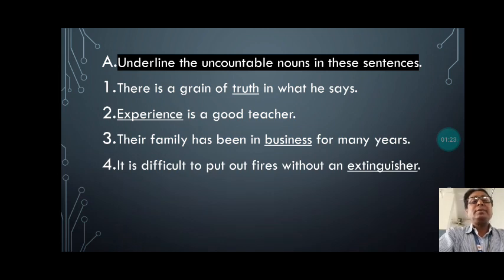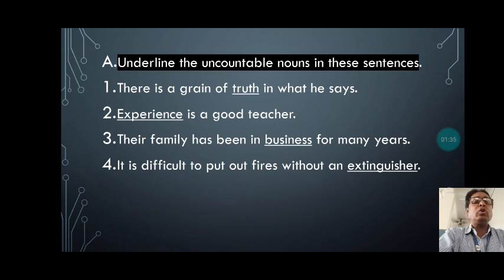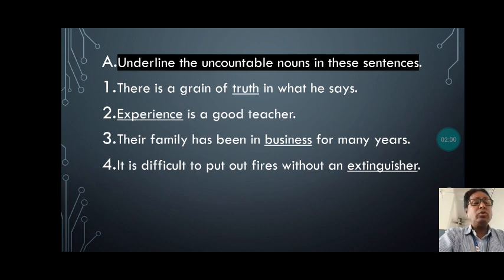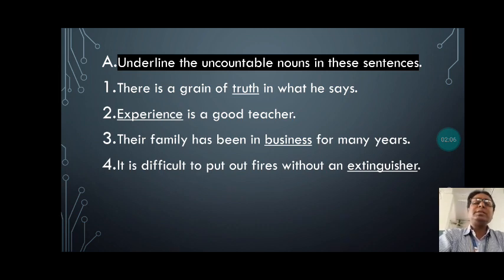In the first sentence: 'There is a grain of truth in what he says.' You can see the underlined word in this sentence — 'truth.' I have already underlined it for your convenience, so that when you write all these questions you must be correct and quite accurate. The word 'truth' in this sentence is an uncountable noun. Second sentence: 'Experience is a good teacher.' Obviously, the word 'experience' is an uncountable noun — it is an abstract noun and so it is an uncountable noun.